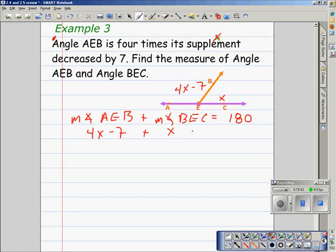Simply take a few steps to solve the equation. 5X minus seven is equal to 180. I get the 5X from combining 4X and X. Using the addition property of equality, I can add seven to both sides, leaving me with 5X is equal to 187.